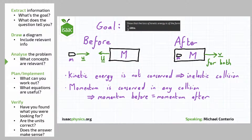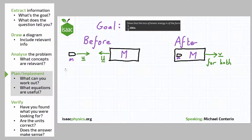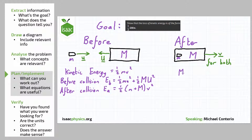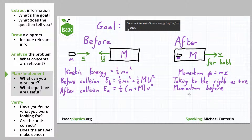We can now use these concepts to work on a plan to solve this problem. We know that the kinetic energy of an object is given by half mv squared, so we can use this to look at the kinetic energy before and after the collision. Before the collision, the kinetic energy Eb equals half little m times little u squared plus half capital M times capital U squared. After the collision, the kinetic energy Ea equals half multiplied by the sum of the two masses multiplied by v squared. We also know that momentum is conserved. Taking right as positive, the momentum before the collision is given by little m times little u minus capital M times capital U.